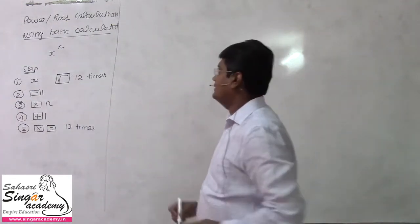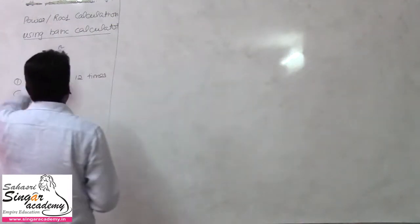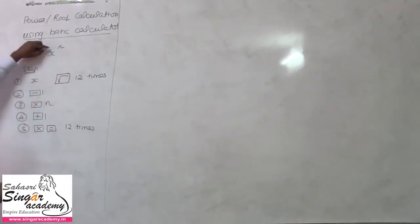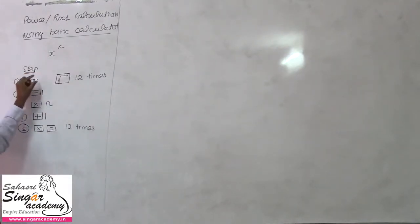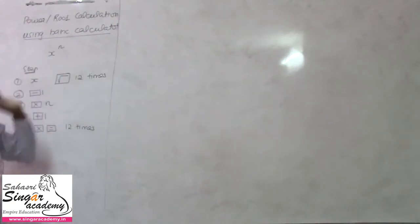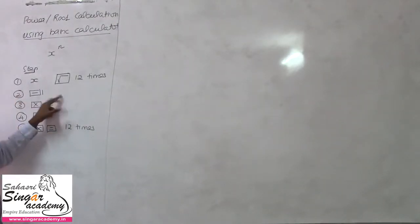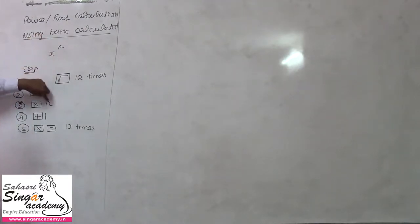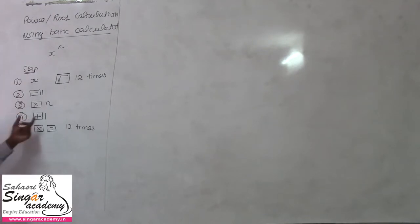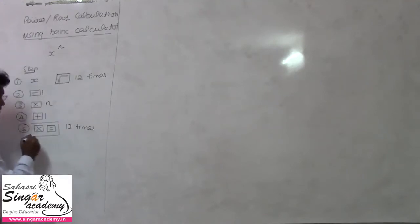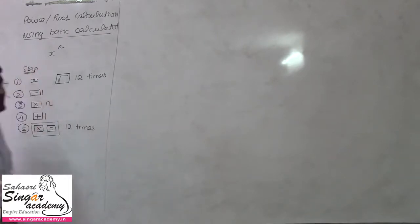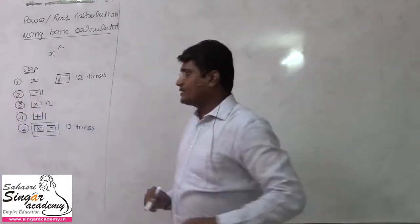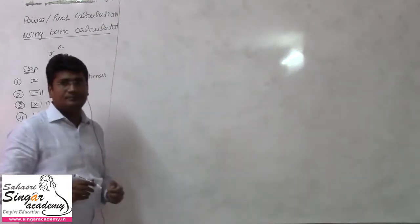On a basic calculator, to find x to the power n: press x, then press the root symbol 12 times, then press minus 1. Take that answer, multiply by the power number, then add 1. Whatever answer you get, you will do this operation and get the final result. Let me teach you two aspects of this.